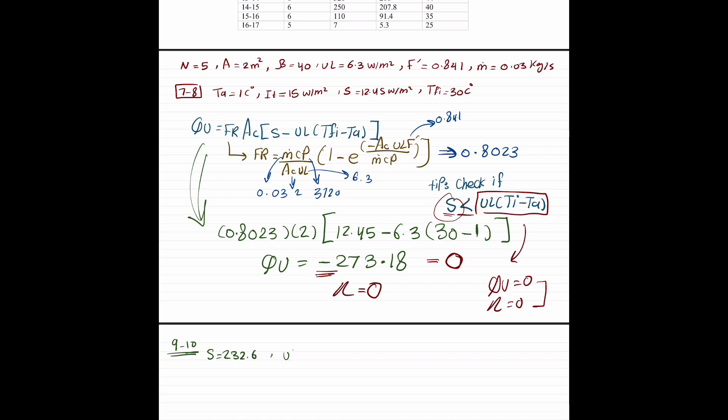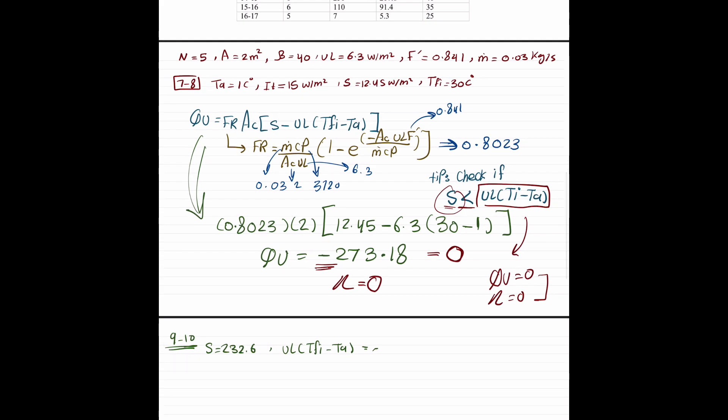Which is, I think 201. I just want to make sure. Yeah, it's 201. So, the rule which says S less than UL TFI minus TA should give us a 0 is not applicable, since S is greater than UL. So, here, we're basically going to have a value for QU and the efficiency.